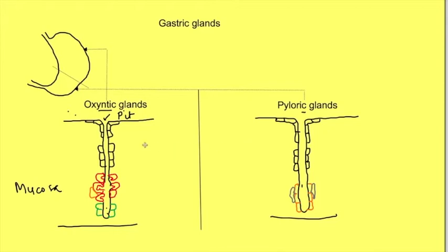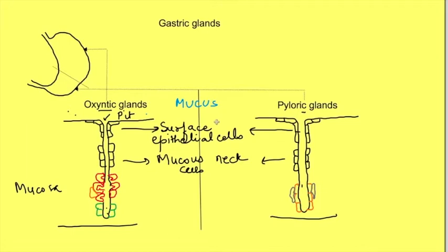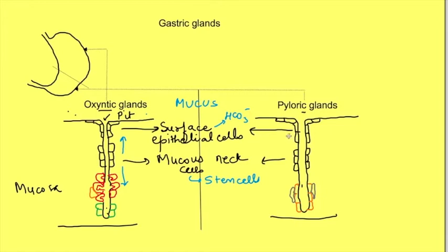Both types of glands at the surface have surface epithelial cells, followed by mucus neck cells. Surface epithelial cells and mucus neck cells secrete mucus into the lumen of the stomach. Surface epithelial cells also secrete bicarbonate into the lumen. Among the mucus neck cells there are also stem cells, which produce cells that can migrate both up and down along the glands to form other cell types.